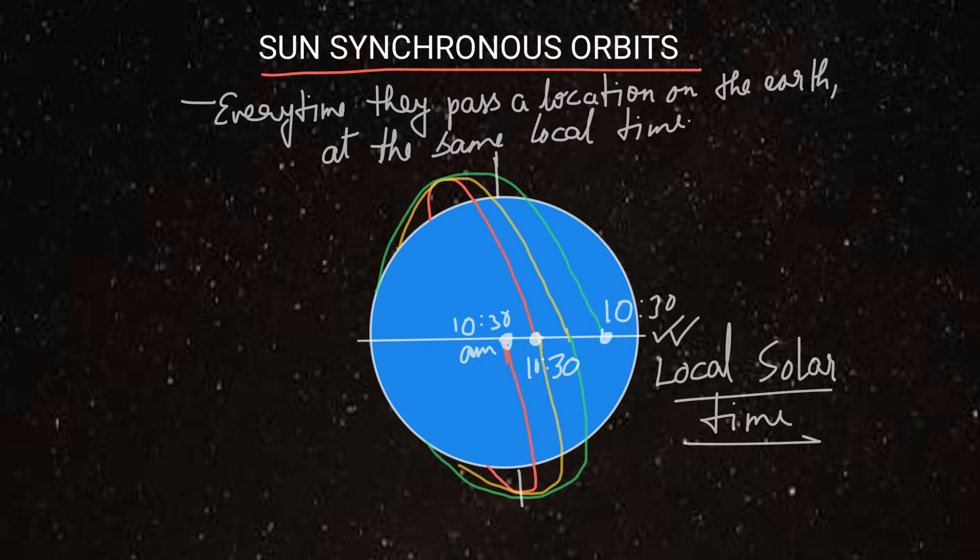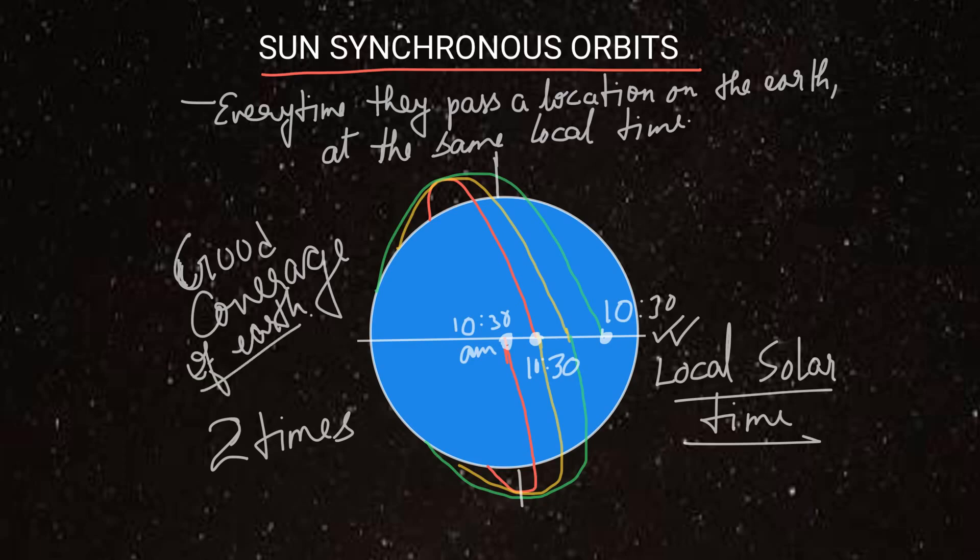Hence, they cross each location at the same local solar time every day. Since it takes sun-synchronous satellites 99 minutes to complete one round, and given its trajectory, it visits each point on the earth twice, crosses it twice in a day - once in the day and once in the night. Hence, it ensures a very good coverage of the whole earth, covering almost all places on earth.